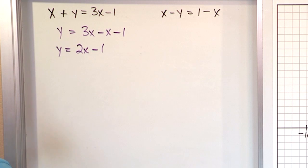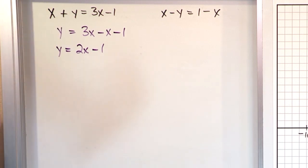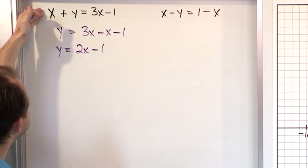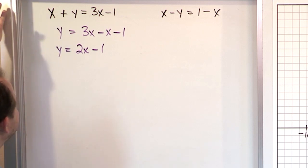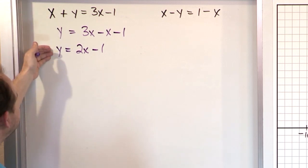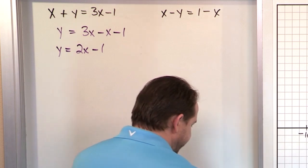Now this looks an awful lot like a line. So you see, this equation and this one are the same thing. It's just that I've kind of made this one hard to read, and you have to clean it up a little bit - and that's going to be on you.